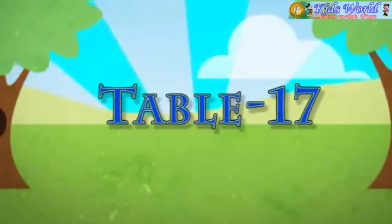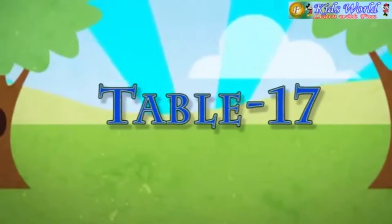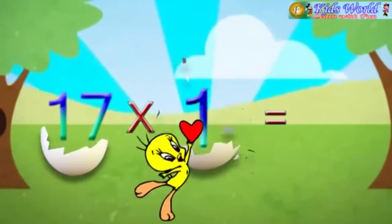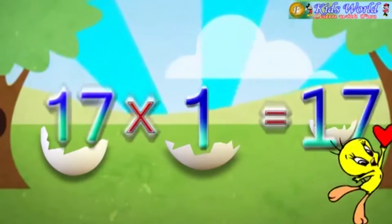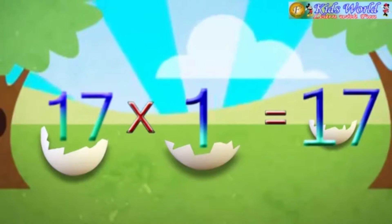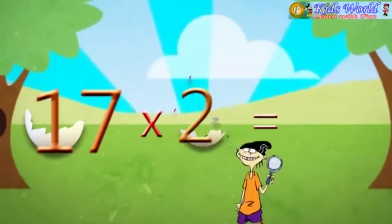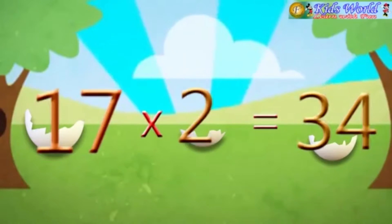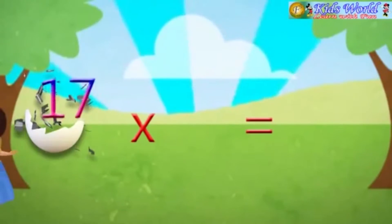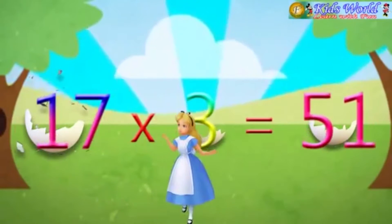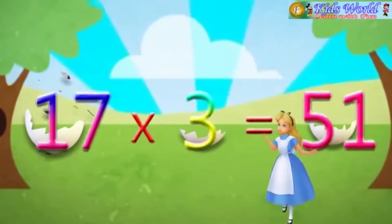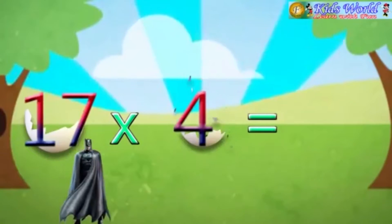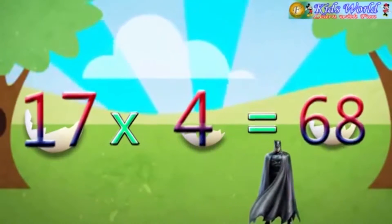Table 17. 17 into 1 is equal to 17. 17 into 2 is equal to 34. 17 into 3 is equal to 51. 17 into 4 is equal to 68.